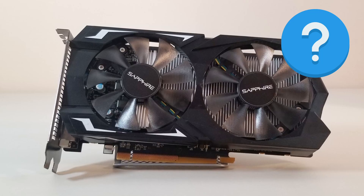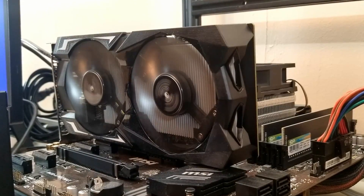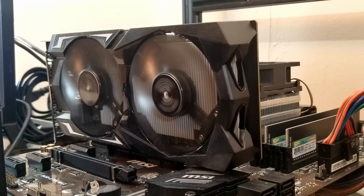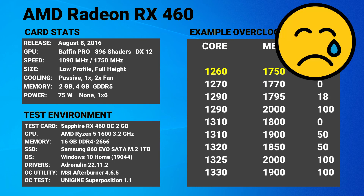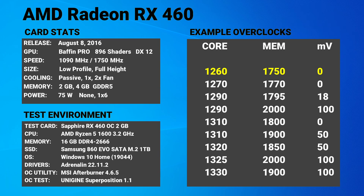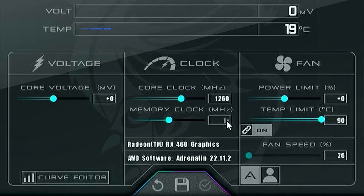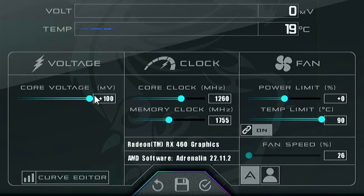So, how did our test card do with overclocking? Well, after quite a bit of testing, this particular card was only able to reach a solid overclock of 1260MHz core clock and 1750MHz memory clock. Needless to say, this is pretty disappointing, and is actually the lowest overclock out of all the example values. In fact, we couldn't get the memory clock to even go up an additional 5MHz without performance decreasing noticeably. Attempting to add additional voltage made no difference whatsoever.